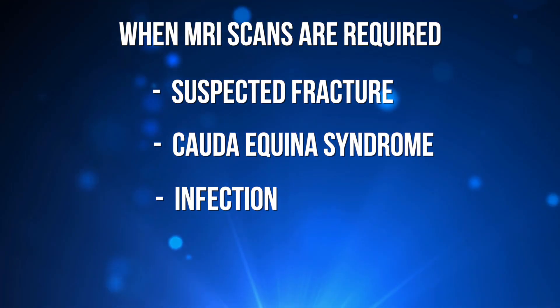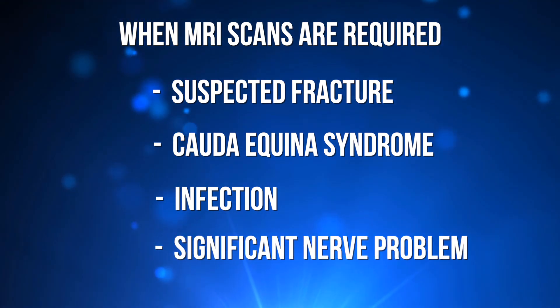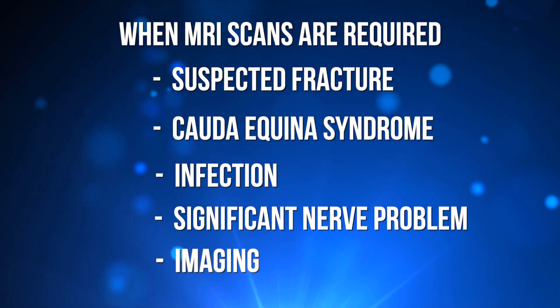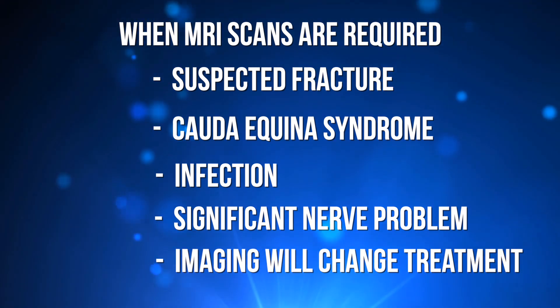Very rarely, imaging is needed when we suspect a significant nerve root problem in the lumbar spine. This typically presents with leg and back pain, where the leg pain tends to be more painful than the back, sometimes with associated leg weakness or sensory changes. When there is no improvement with physiotherapy and medication — such as non-steroidal anti-inflammatory drugs and neuropathic tablets — and when the image would lead to a procedure such as a spinal injection or surgery, then imaging may be needed.